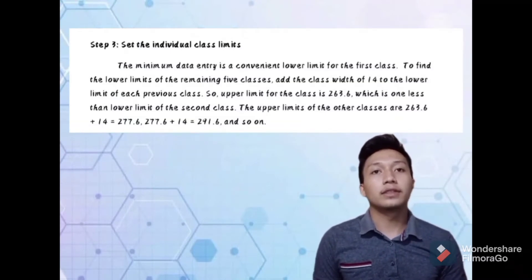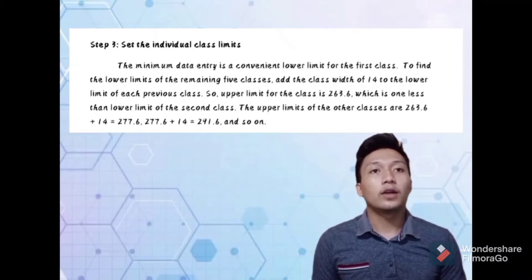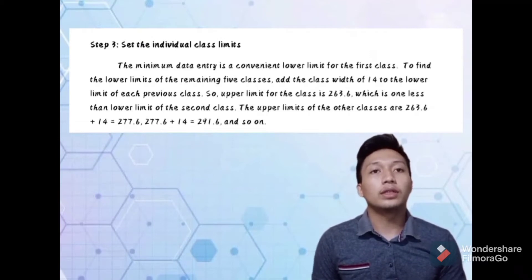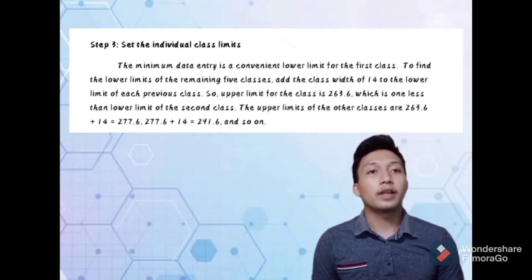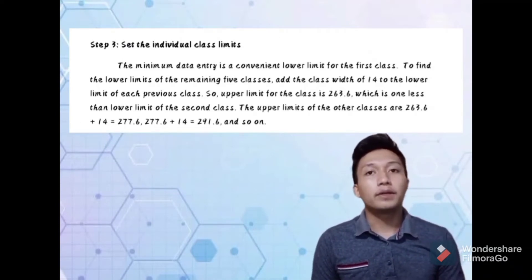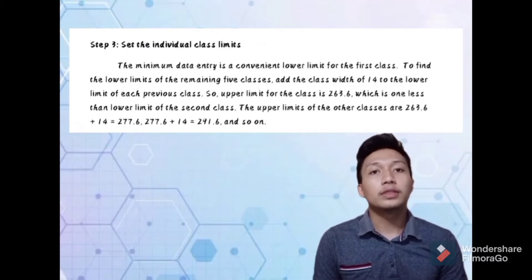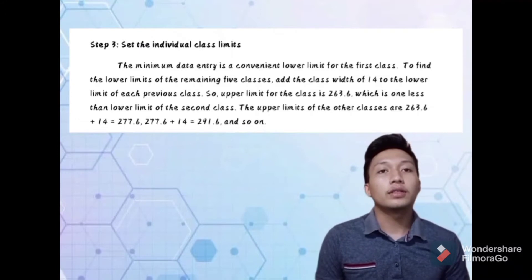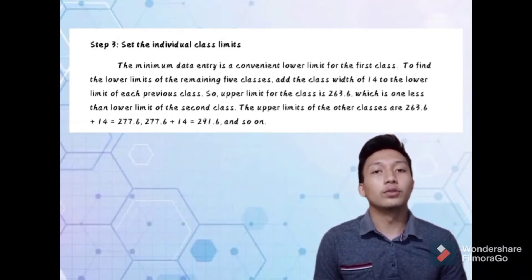The minimum data entry is the conventional lower limit for the first class. To find the lower limit of the remaining 5 classes, add the class width of 15 to the lower limit of each previous class. The upper limit for the class is 296.6, which is one less than the lower limit of the second class. The upper limit of the other classes are 263.6 plus 14 equals 277.6, then 277.6 plus 14 equals 291.6, and so on. After that, we have to make a tally mark for each data entry in the appropriate class.